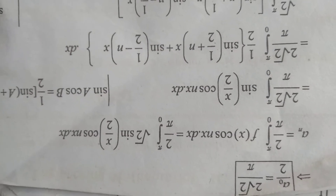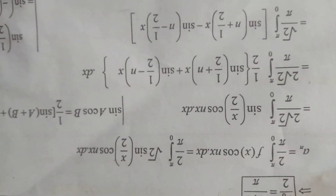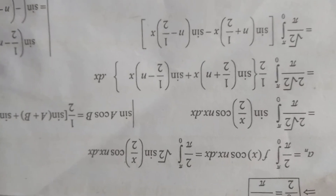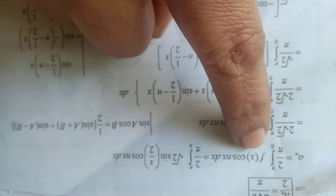Further we get a naught by 2 equals 2 root 2 by pi, since 4 and 2 cancel. We know the generalized equation a of n equals 2 by pi integral from 0 to pi of f of x cos nx dx, which equals 2 by pi integral from 0 to pi of square root of 2 into sin x by 2 into cos nx dx. Removing square root of 2 outside: 2 root 2 by pi integral from 0 to pi of sin x by 2 into cos nx dx.